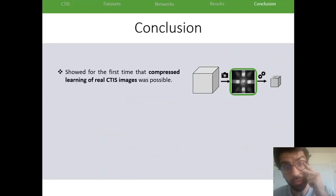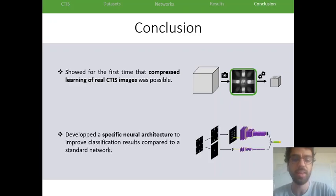As a conclusion, we showed actually two things. We showed for the first time that compressed learning on real CTIS images was possible. And this opened the path to maybe avoiding reconstruction algorithms in cases where you want to answer a question, like a classification question, that you can possibly do it on CTIS images directly. And we developed a specific neural architecture to improve classification results compared to a standard network.